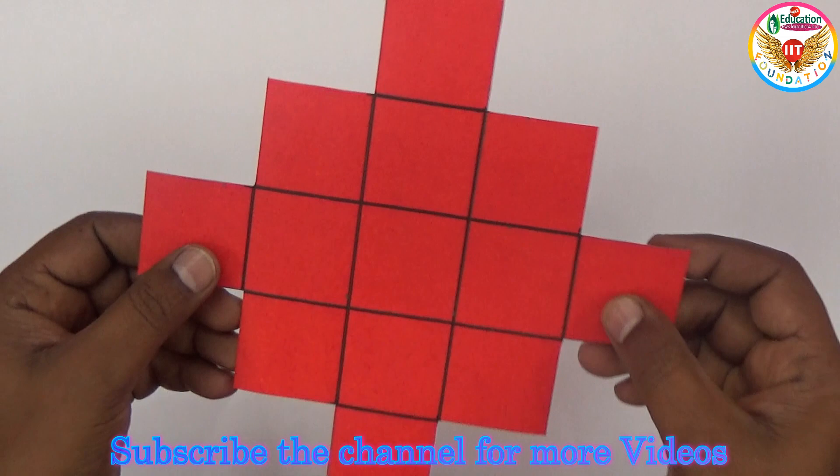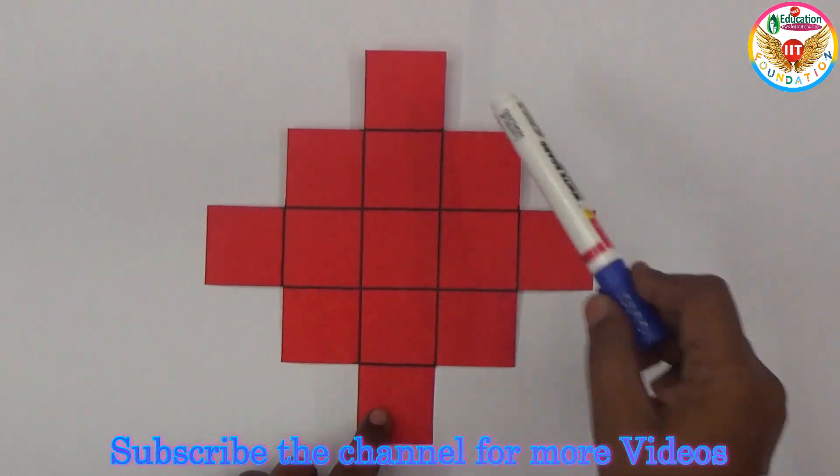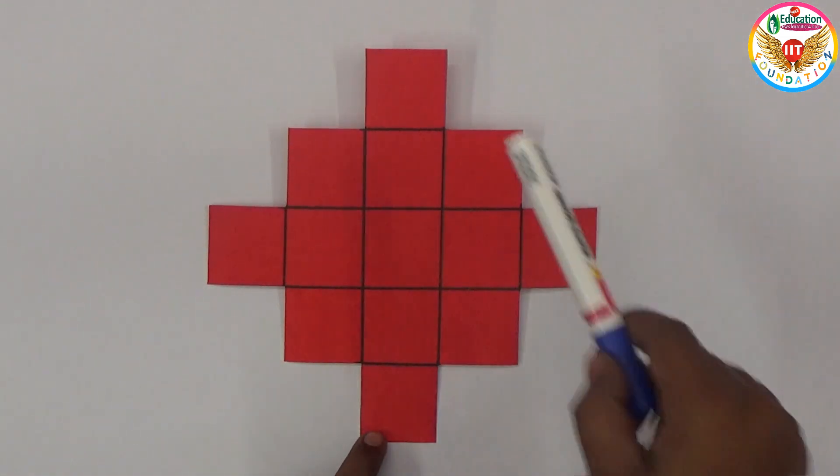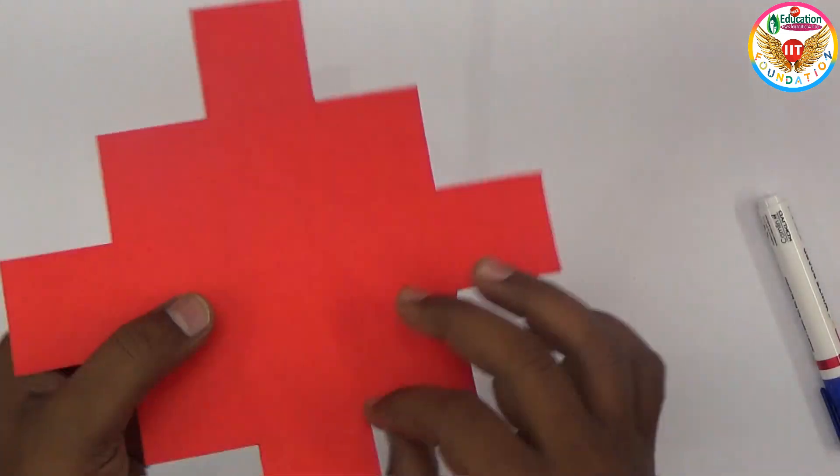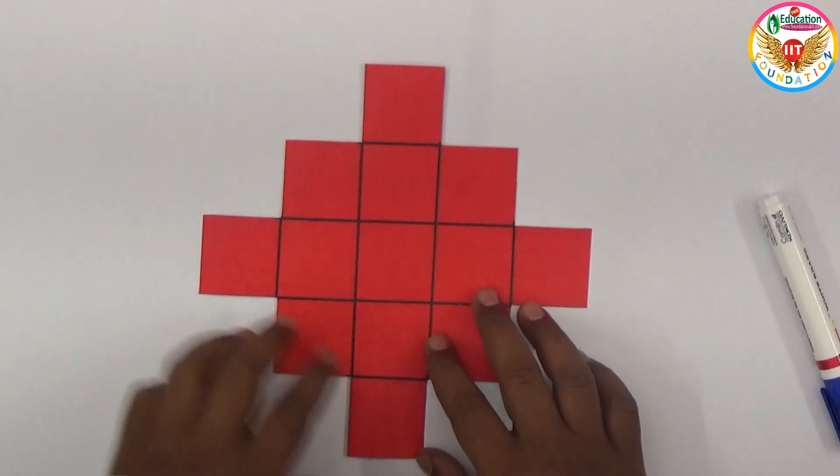On the chart paper I made like this. Now here is a total 13 squares. So each and everything is equal in area. So total 13 squares. This I made on just normal chart paper. Now here is a question.